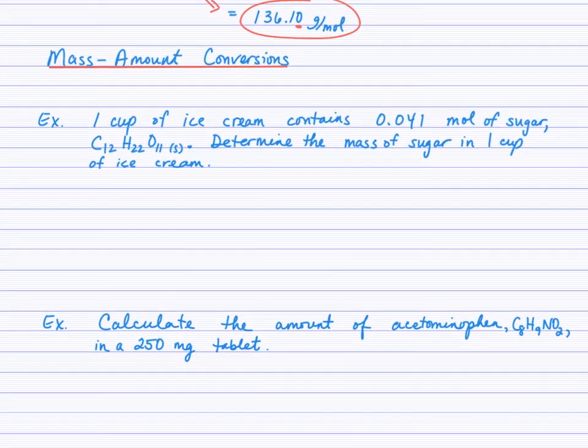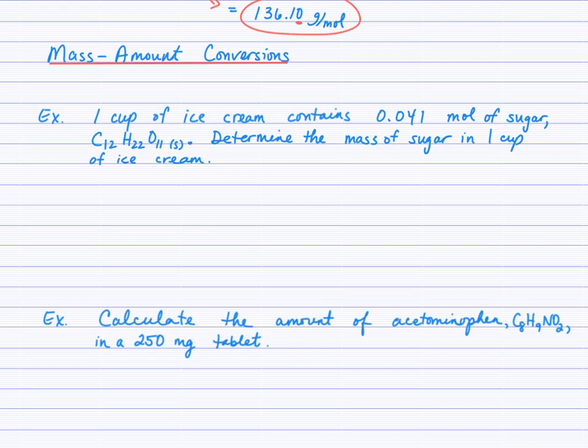All right, so a couple of examples here. There's just two examples looking at mass amount conversions. You'll be practicing more in class. So one cup of ice cream, vanilla ice cream in particular, contains 0.041 moles of sugar. And I gave you the formula of the table sugar, the sucrose here. C12 H22 O11. So I'm asking you to determine the mass of sugar in one cup of ice cream. So this is what we're looking for, right? And we know in one cup of ice cream, there's this many moles. So this is our given. So we'll look for the mass of sugar. You can either write that as number of grams, or you can write that as the mass, lowercase m. That stands for mass. And we can put the formula here.